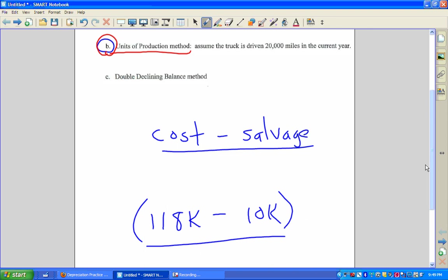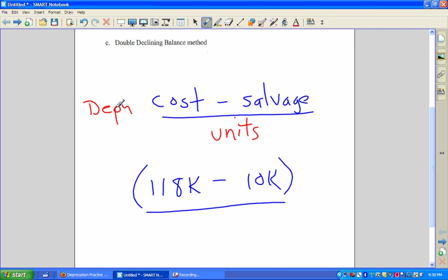except that over here we divide by total units, not the life of the asset in years like we did for straight line. So our annual depreciation cost or our depreciation expense here is going to be equal to the total cost minus the salvage or residual value divided by units.